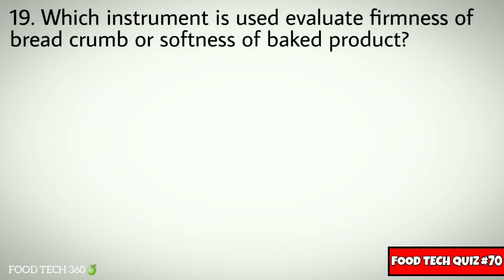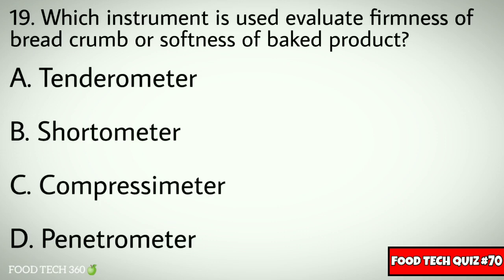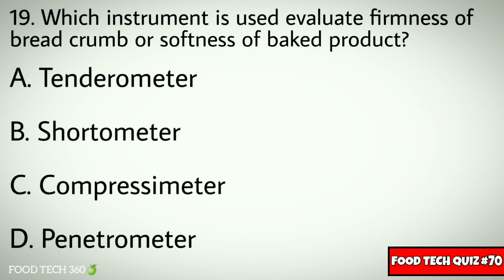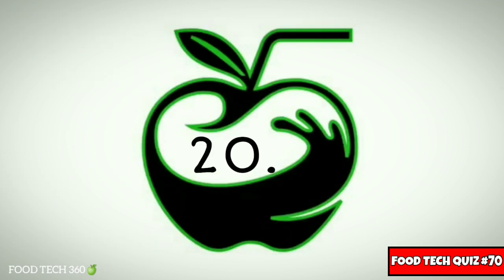Q19. Which instrument is used to evaluate firmness of breadcrumb or softness of baked products? Options: A. Tenderometer, B. Shortometer, C. Compressivometer, D. Penetrometer. Correct answer: C. Compressivometer.